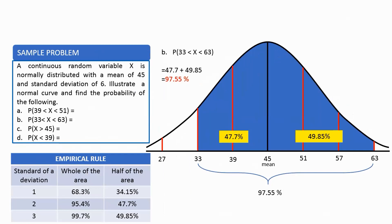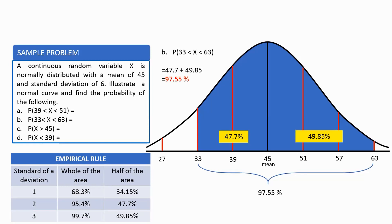For letter B: 33 is less than X less than 63. We get the area from 33 up to the mean of 45, which is two standard deviations, giving 47.7%. Then from 45 up to 63 is three standard deviations, giving 49.85%. To get the total area from 33 to 63, we add both sides: 47.7 plus 49.85 equals 97.55%.